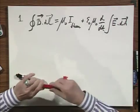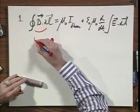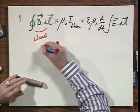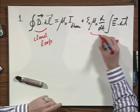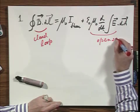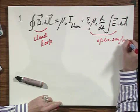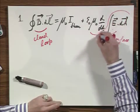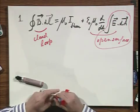Essential is that you realize that this is a closed loop, and that you must attach to that closed loop an open surface, and you have to do the calculation of this to that open surface and take the time derivative.